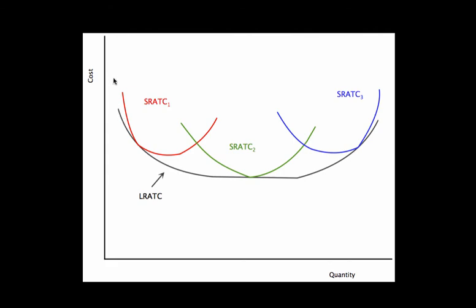The reason this curve has its shape is because in the beginning we have what's called economies of scale — declining long run average total cost as we produce more. There's an advantage to being larger in the long run in terms of average cost. If I have a really small output, there's only so much I can do to lower that cost because I'm not taking advantage of producing more output and spreading out those costs. But as I get bigger, I can take advantage of spreading out fixed costs and buying machinery that automates things. So in this decreasing range, this is what we call economies of scale.